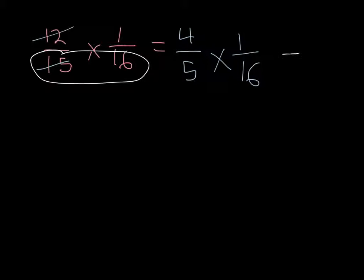Now, I can even go further here. I can cancel this 4 and this 16 because they have a common multiple in 4. So 4 divided by 4 is 1. 16 divided by 4 is 4. So now let me rewrite my problem one more time.